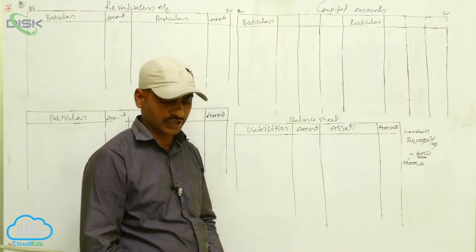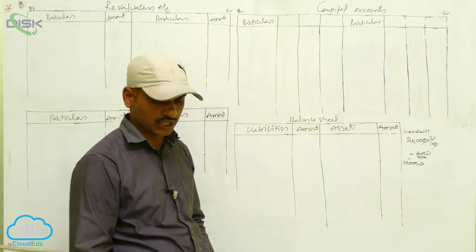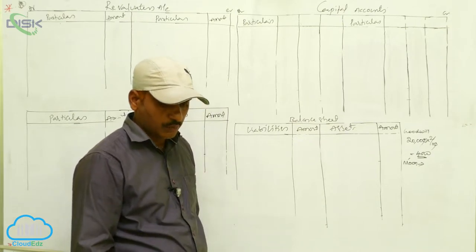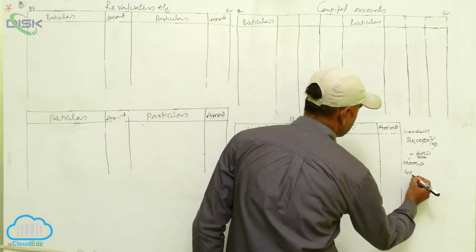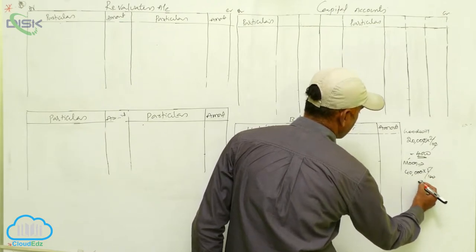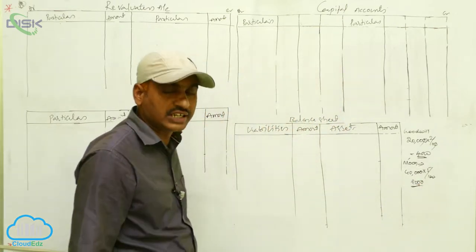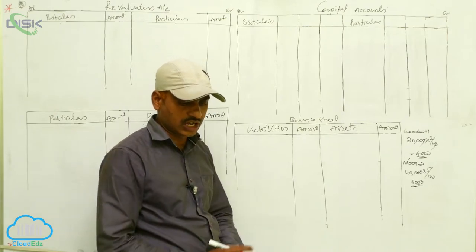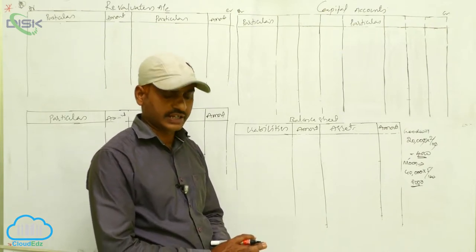Buildings were ₹35,000 and are now increased to ₹42,000, so the difference is ₹7,000. Next, provision for bad debts at 5% on debtors: debtors are ₹40,000 into 5/100 — cancelling zeros gives ₹2,000 provision for bad debts ascertained at the rate of 5%.